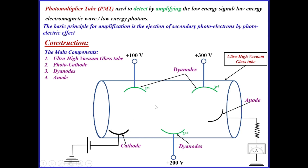The photomultiplier is used to detect by amplifying low energy signals, low energy electromagnetic waves, or low energy photons. Electromagnetic waves are nothing but photons. The basic principle for amplification is the ejection of secondary photoelectrons by the photoelectric effect.